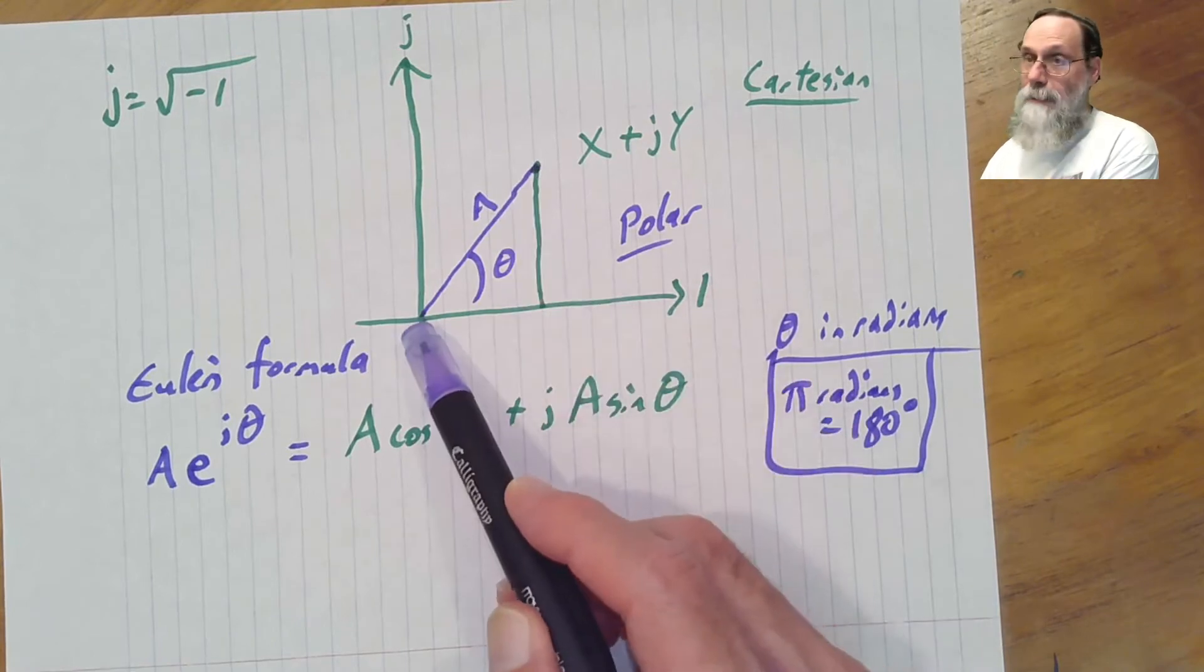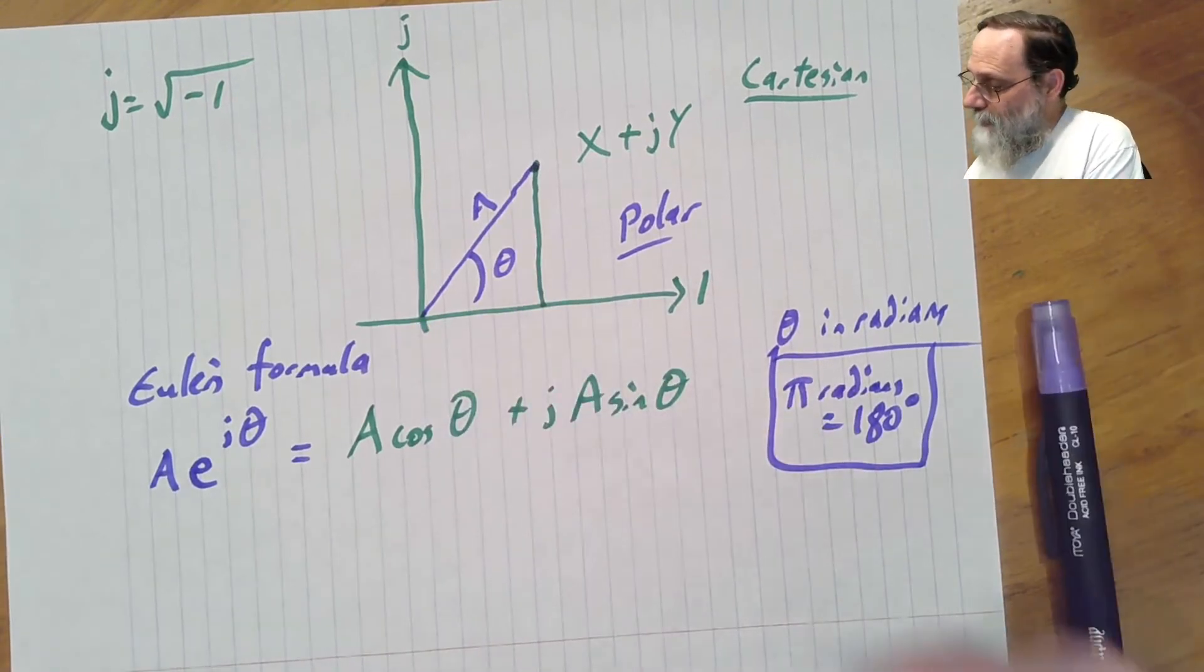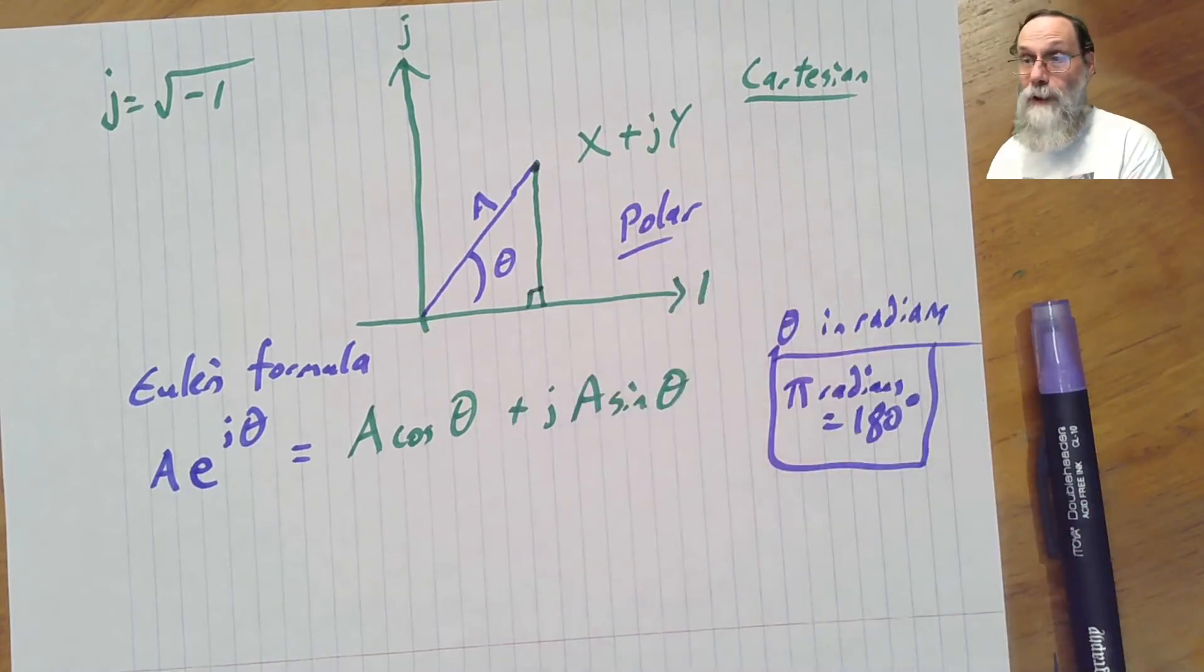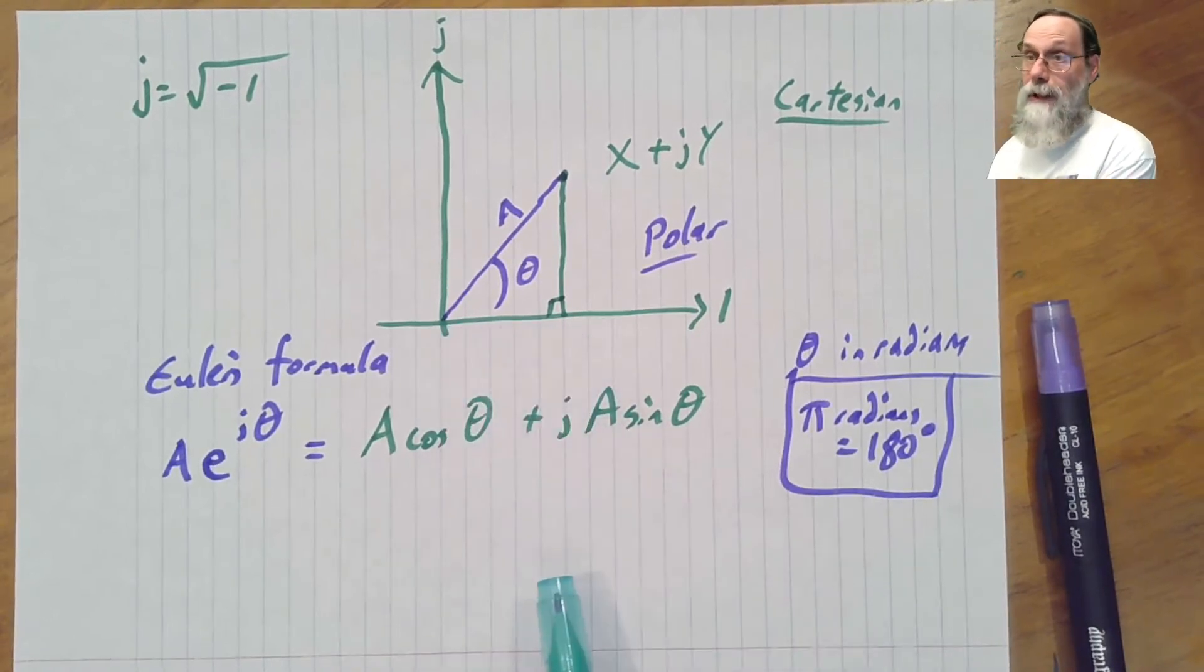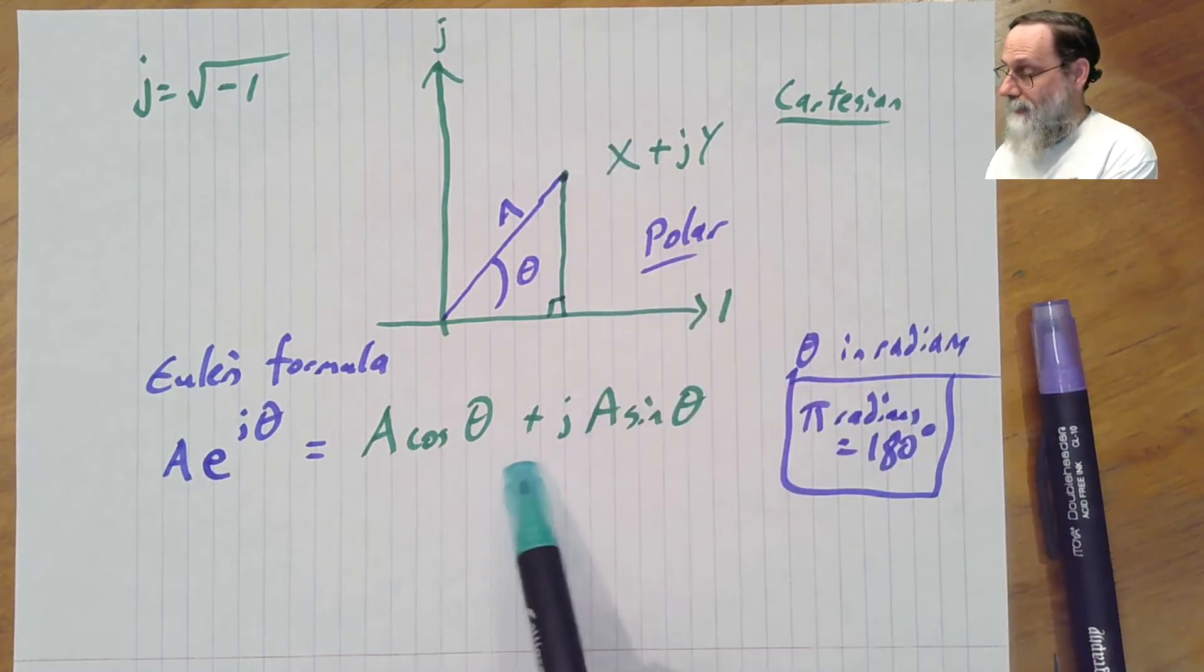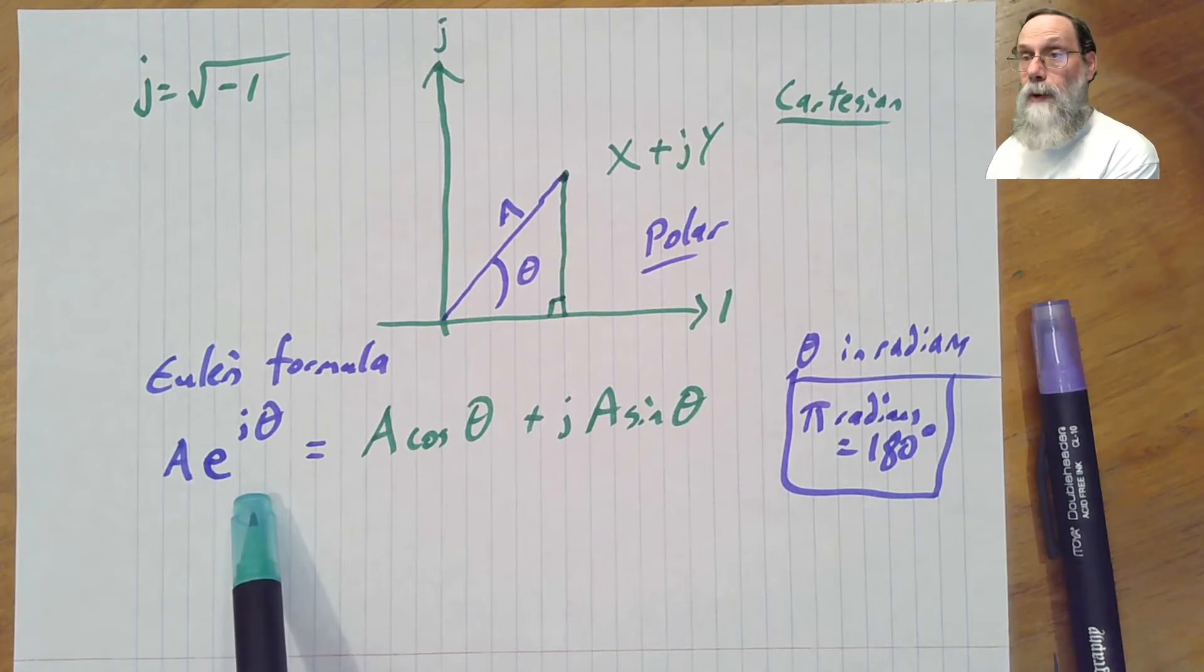A is the hypotenuse here. We've got Cartesian coordinate system here. So this is a nice right angle. We have definition of cosine is, this length here is A cosine theta. This length here is A sine theta. So this point is represented this way in Cartesian coordinates, and this way in polar coordinates.